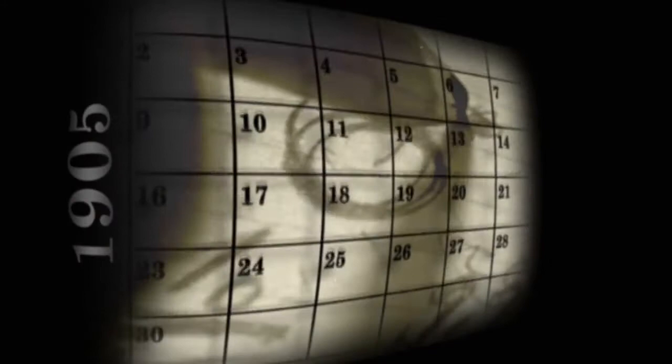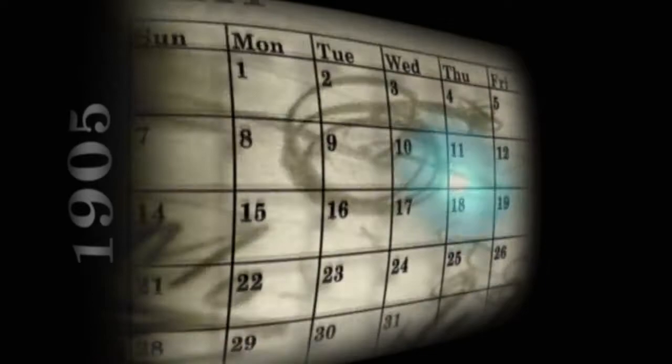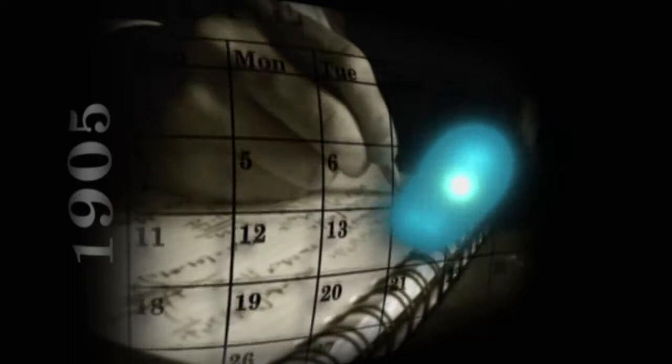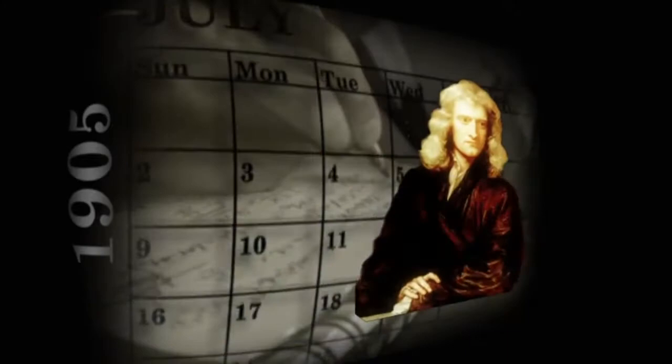During the course of that one year, the brash 26-year-old Einstein helped clinch the then controversial case for the existence of atoms. He proposed that light is made of particles of energy, and he began to turn the tables on Isaac Newton's laws of motion, laws revered for more than 200 years. He said that space and time were relative depending on one's frame of reference.